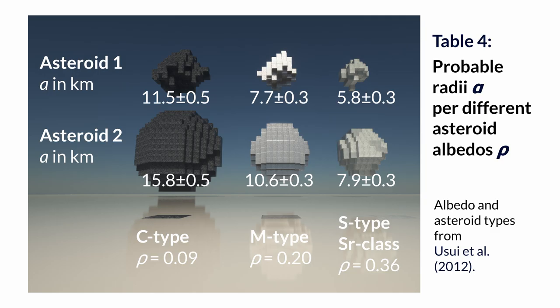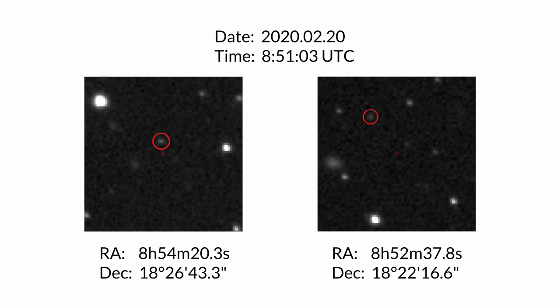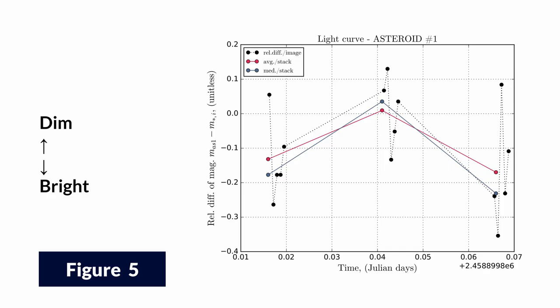Over the span of 75.5 minutes, the light curve of asteroid 1 went from bright to dim to bright. This suggests that the surface reflecting sunlight could be of an irregular shape or have a varied composition with varied albedo.